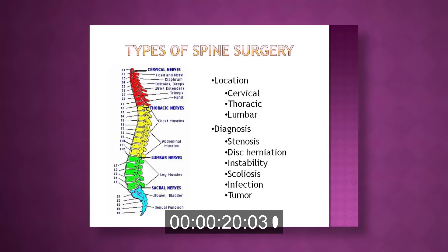There are three different areas of spine surgery: cervical spine, thoracic spine, and lumbar spine. The diagnoses that may lead to you having surgery are stenosis, disc herniation, instability, scoliosis, infection, or tumor.